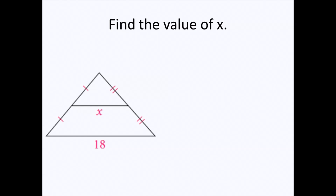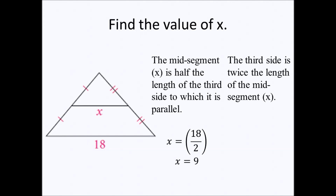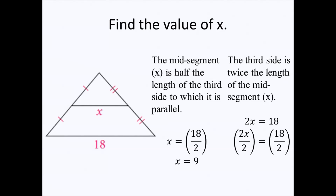Find the value of X. There are two approaches. The first is that the mid-segment X is half the length of the third side to which it is parallel. Therefore, X equals 18 divided by two, which equals nine. The second approach is that the third side is twice the length of the mid-segment X, so 2X equals 18. Dividing both sides by two: 2X divided by two equals 18 divided by two, giving X equals nine.